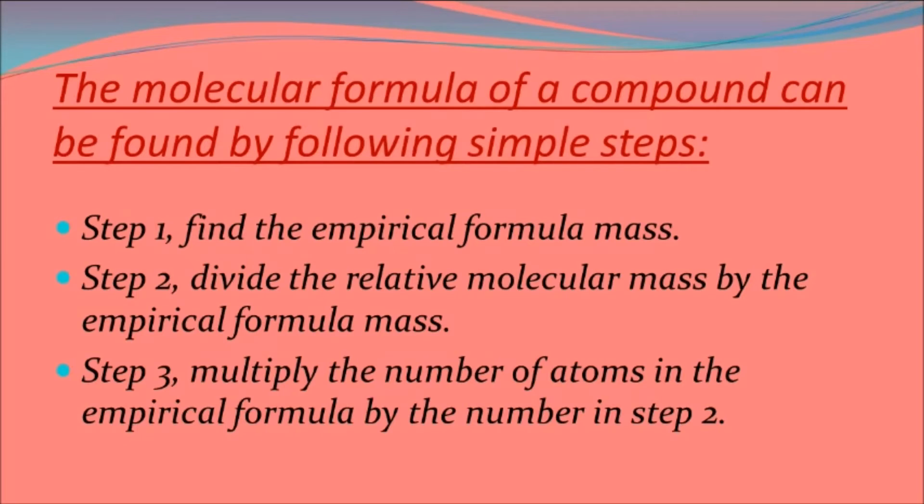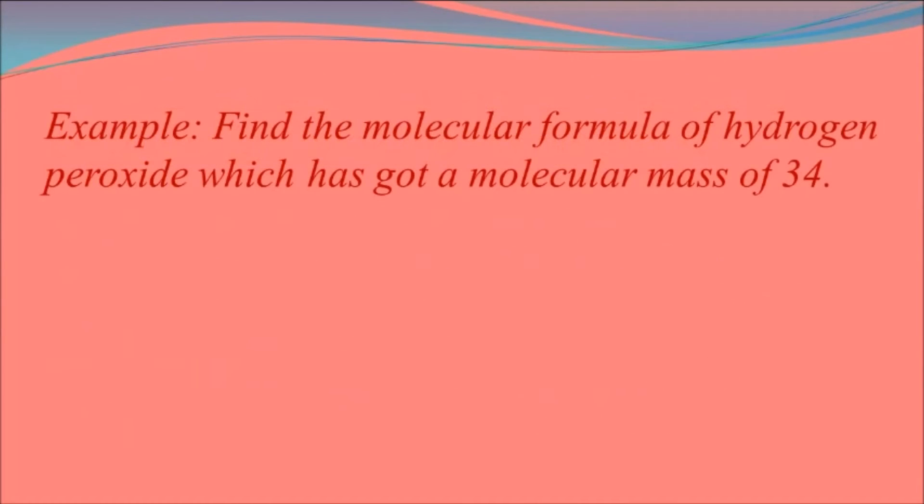So to find the molecular formula of hydrogen peroxide which has got a molecular mass of 34, we firstly find the empirical formula mass, which in this case is 16 plus 1, and that is 17.